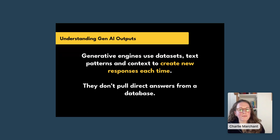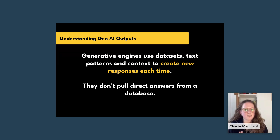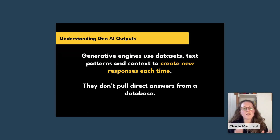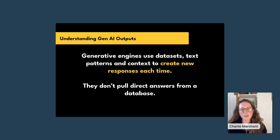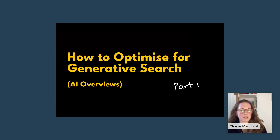This means generative engines are essentially using data sets, text patterns, and context to create new responses every time — they're not copy-pasting or pulling direct answers from a database. They use information from different sources to create a response relevant to the user. Increasingly, we're also seeing them make responses more personalized if you have settings turned on in ChatGPT to allow it to learn about you and your search history.